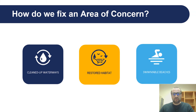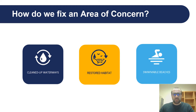So how do you fix an Area of Concern? To no longer be listed as an AOC, we must address the issues that aren't allowing the public to fully use or enjoy their water resources in a safe way — whether that's for eating, drinking, swimming, or fishing. In general, the work is organized into three objectives: cleaning up our waterways and improving water quality, restoring fish and wildlife habitat and populations, and improving outdoor recreational opportunities like swimming, boating, and fishing.